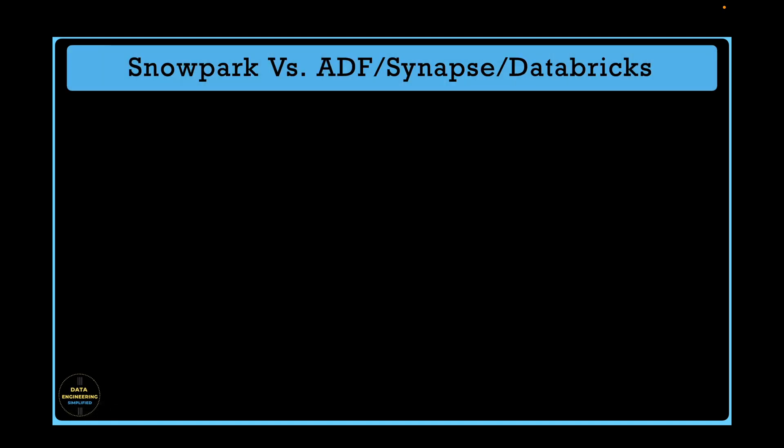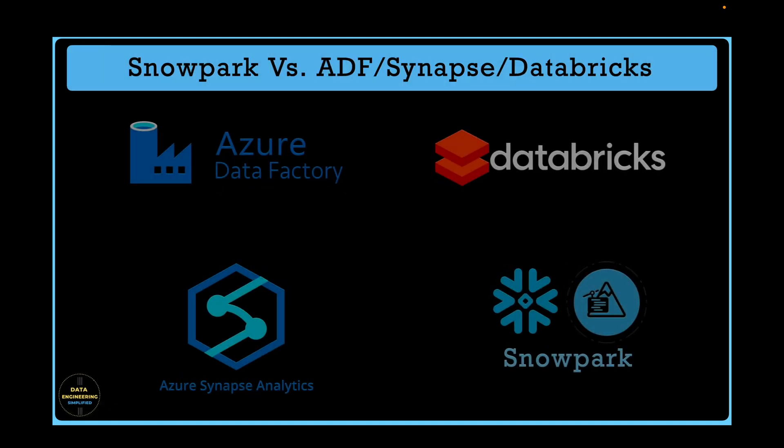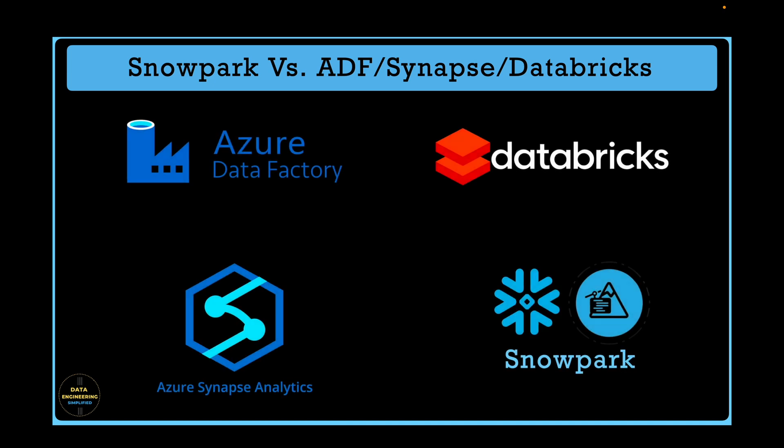In this chapter, we won't focus on learning about ADF, Azure Synapse, or Databricks. Instead, we will primarily explore the main features of this platform and understand what Snowflake/Snowpark offers to achieve similar goals. If those goals can be achieved using Snowflake/Snowpark, we will understand how, and if not, whether any workaround is available.